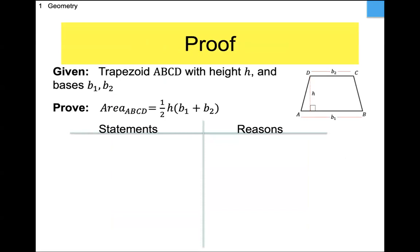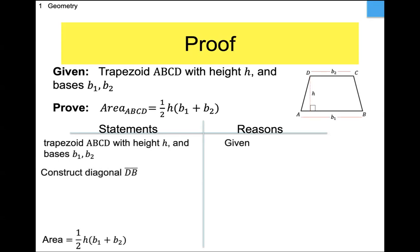The proof will show that you take the two bases, add them together, multiply by the height, and divide by two — that gives the area. As always in high school geometry, when you're trying to prove something, it probably involves a triangle. So let's make triangles. I'm going to cut the trapezoid with a diagonal from D to B, making two triangles. I'm not claiming it cuts the trapezoid in half — I'm just making a diagonal.